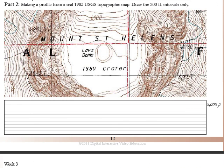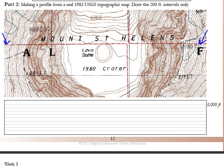In part two, let's make a profile from a real 1983 USGS topographic map of Mount St. Helens. If you know anything about Mount St. Helens, it had a spectacular eruption in May of 1980 and several eruptions since. The map labels the 1980 crater. Mount St. Helens looked very different before 1980, so the US Geological Survey had to redraw the topographic map for this region. Draw a profile based on the red line shown, keeping in mind there's a peak — labeled 8,180 feet — and the terrain drops back down on both sides.